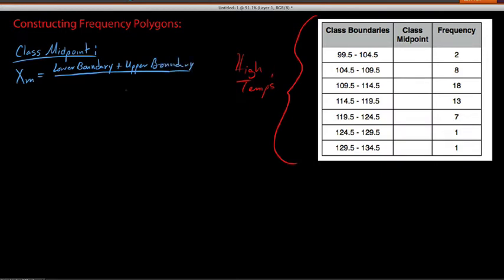And we're going to split this two ways. So, essentially, what I want you to know is this. This is basically the average of the lower and upper boundaries for each class.